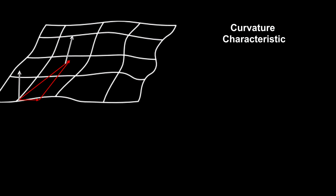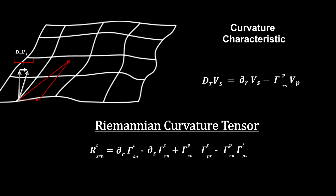Riemann developed the tensor that precisely measures how much the components of a vector change when it is parallel transported along a small closed curve. This is called the Riemannian curvature tensor.